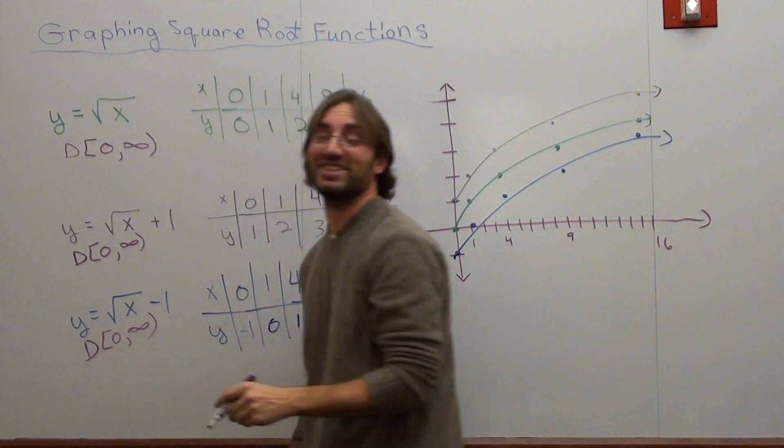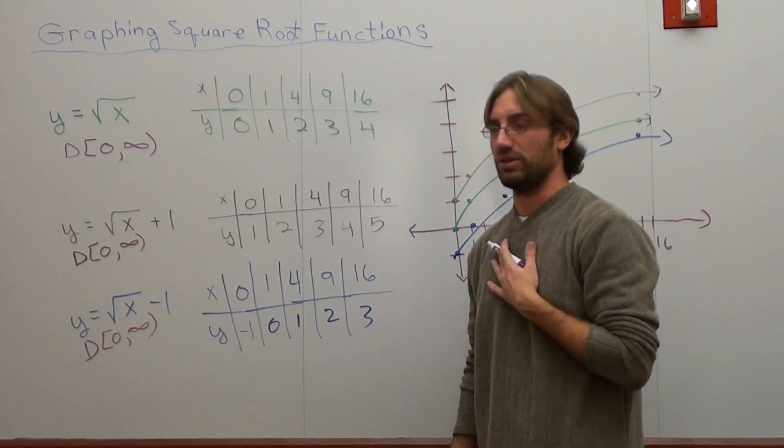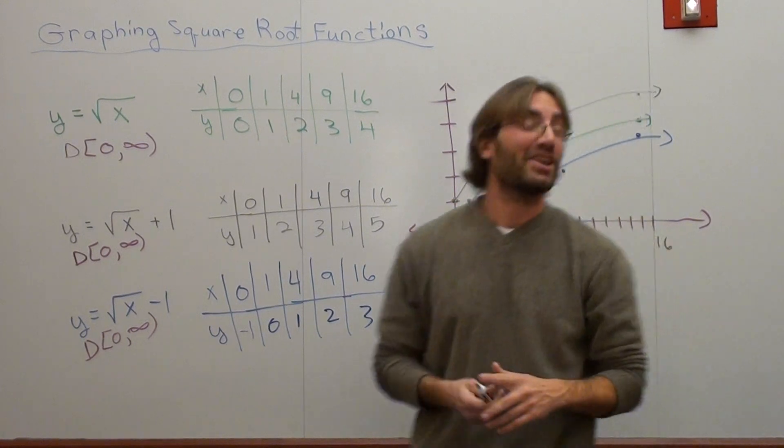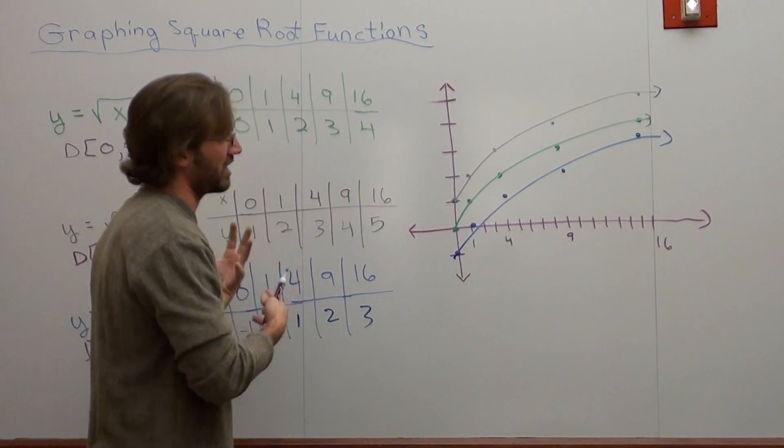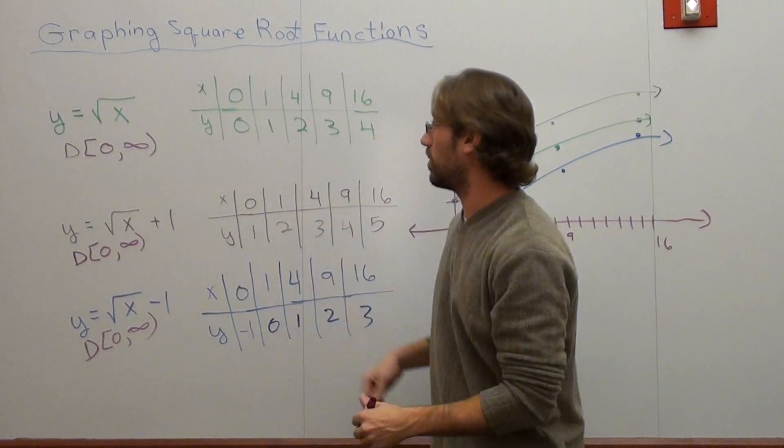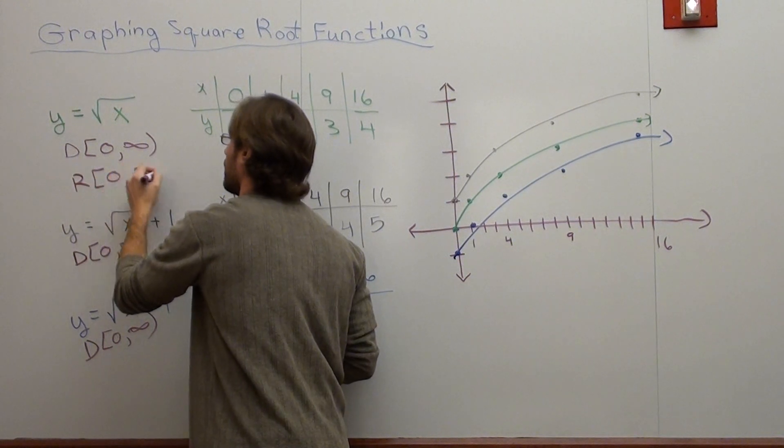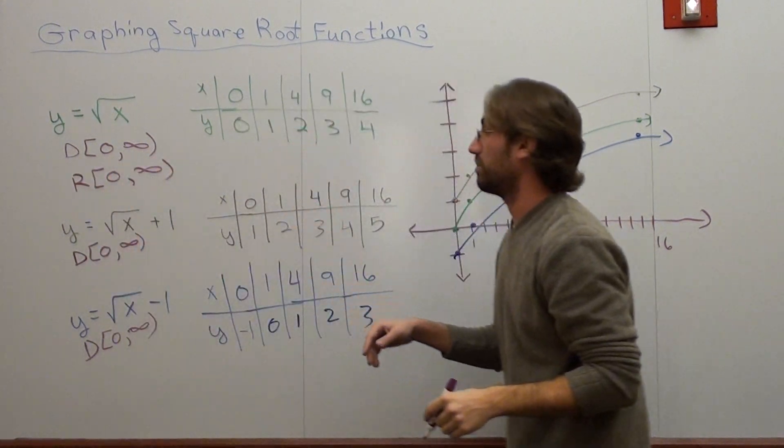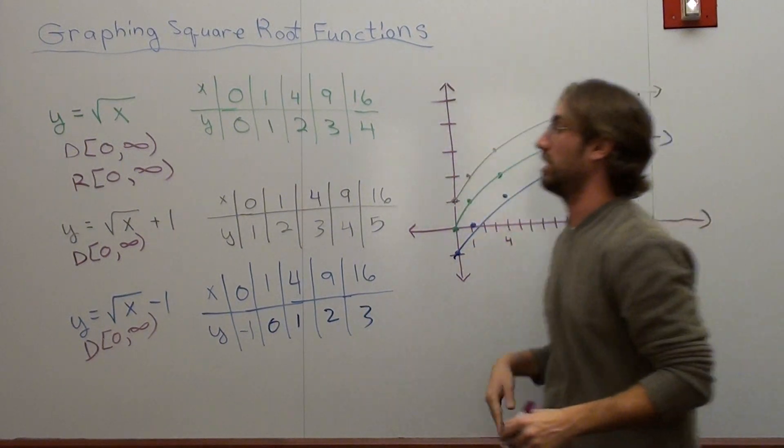I guess they're even sick of hearing the same domain over and over again. That was my attempt at humor. So it goes from 0 to infinity. You can't plug in any negative numbers for x into here. The range is a little bit different. For the first one, it goes from 0 to infinity. But from this one, the black graph, it starts at 1 and goes up.